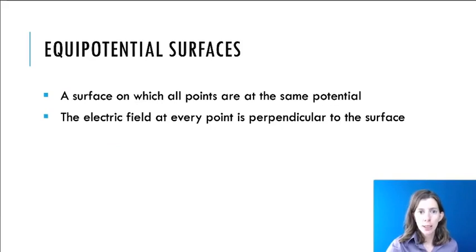So an Equipotential surface, as we just learned, is a surface on which all the points are at the same potential. So hopefully you saw that in the applet. And we also saw that the electric field at every point is perpendicular to the surface.